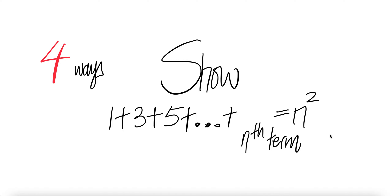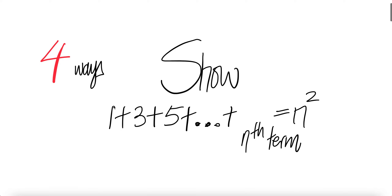Hello, welcome everyone. Let us show that one plus three plus five plus dot dot dot, the nth term, is equal to n squared. Notice we are adding the first odd numbers. If you're adding the first n odd numbers, the sum will be given by n squared — i.e., the number of terms you add, squared. We're going to show this in four ways.